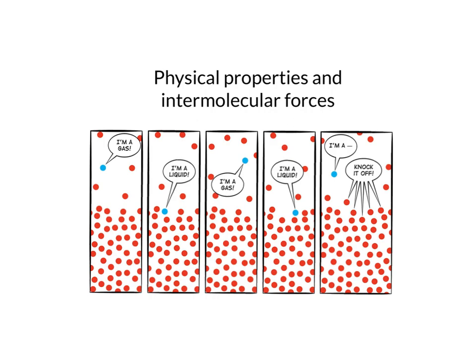If the interactions are strong, then the molecules are pulled close together and they form a liquid. If the interactions are weaker, then there's no strong force to pull those molecules close together and they will be spread out further away from each other, non-interacting, and they will be a gas.